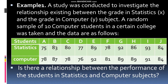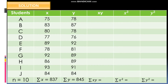Example: A study was conducted to investigate the relationship existing between the grade in statistics, which is the X variable, and the grade in computer, which is the Y variable. A random sample of 10 computer students in a certain college was taken. The data are as follows — students A through J with their respective statistics grades (75 to 84) and computer grades (78 to 84). The question is: is there a relationship between the performance of the students in statistics and computer subjects? We will use the Pearson R formula to solve this.